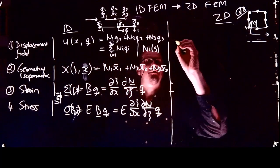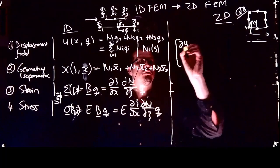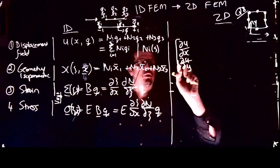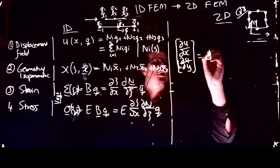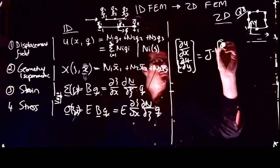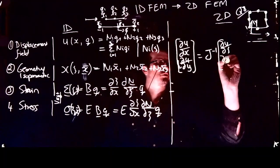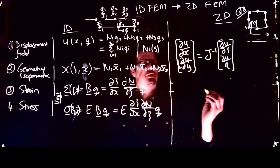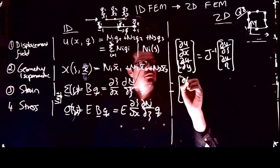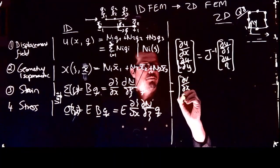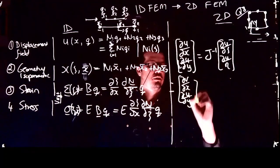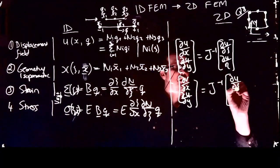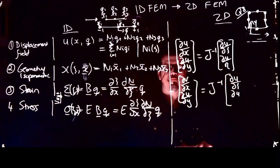What we've learned is that we can write partial u / partial x, partial u / partial y as the inverse Jacobian multiplied by partial u / partial ξ, partial u / partial η. Similarly, we can write partial v / partial x, partial v / partial y as the inverse Jacobian multiplied by partial v / partial ξ, partial v / partial η.